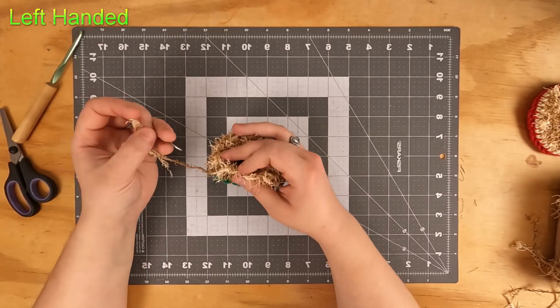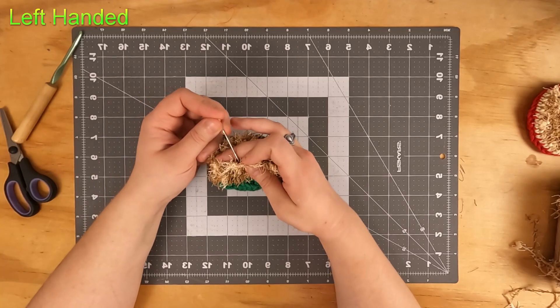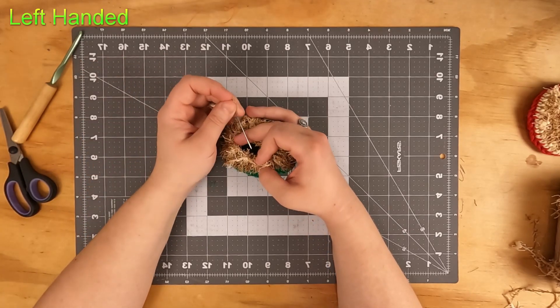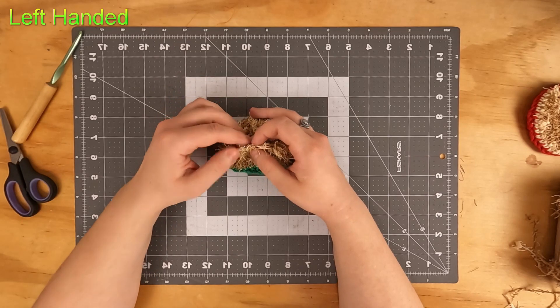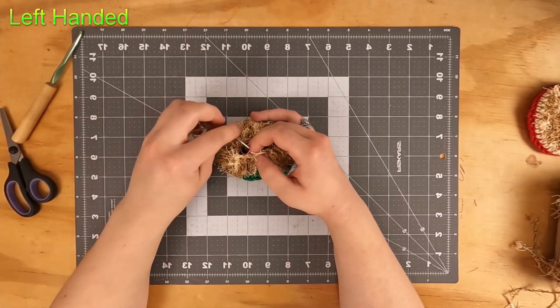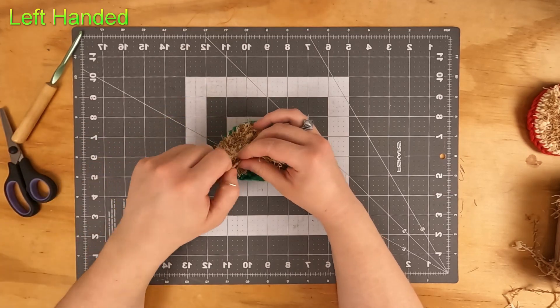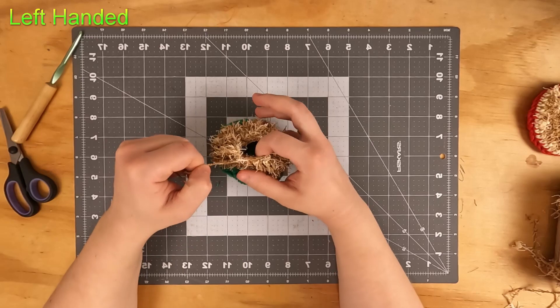We're going to be taking our yarn needle and bringing it from the center of the project outwards through the tops of each of those last 12 stitches. So we have one, two, three - make sure you're cinching it down as you go because you will not be able to cinch it down at the very end.